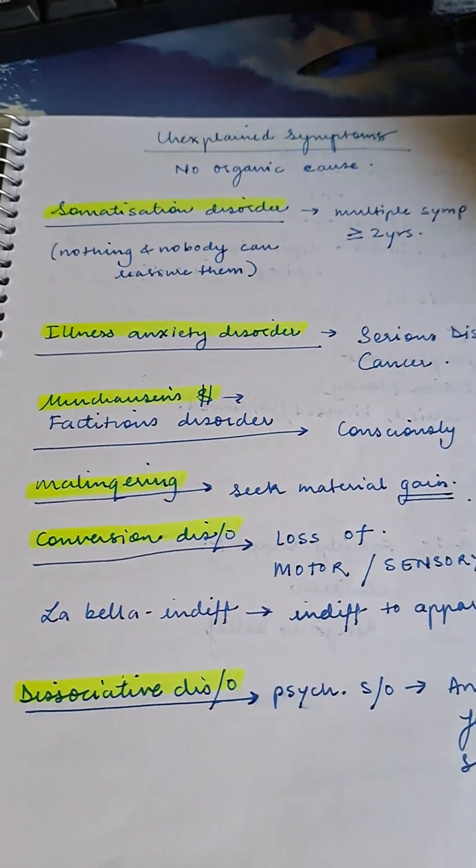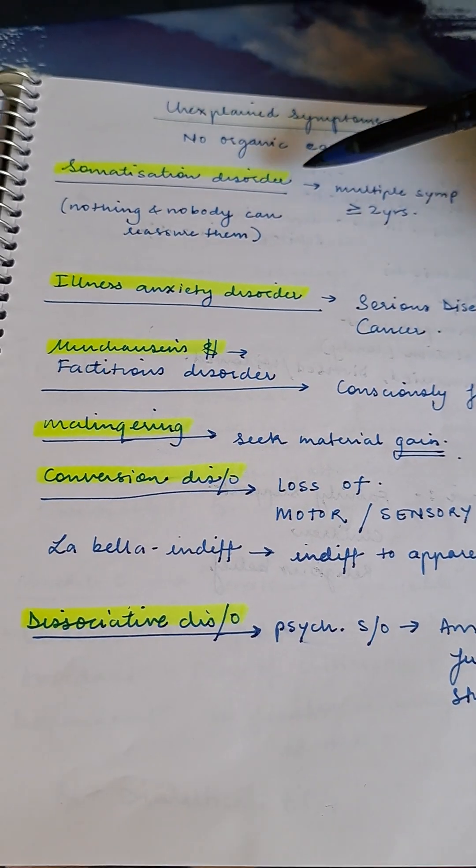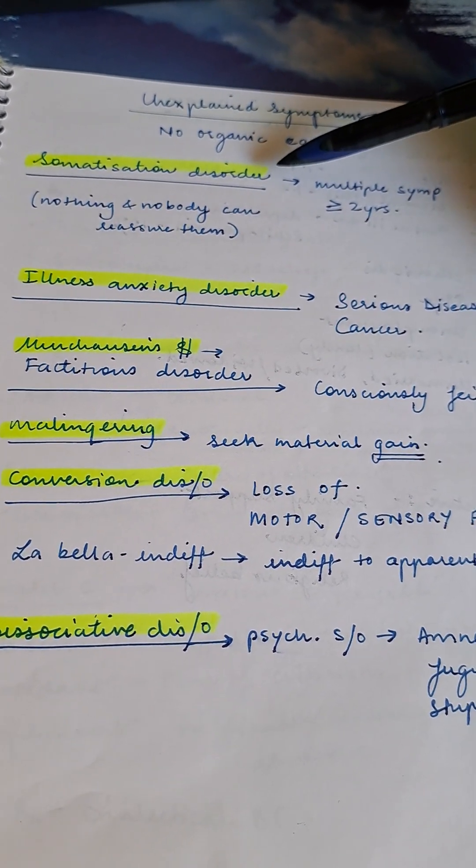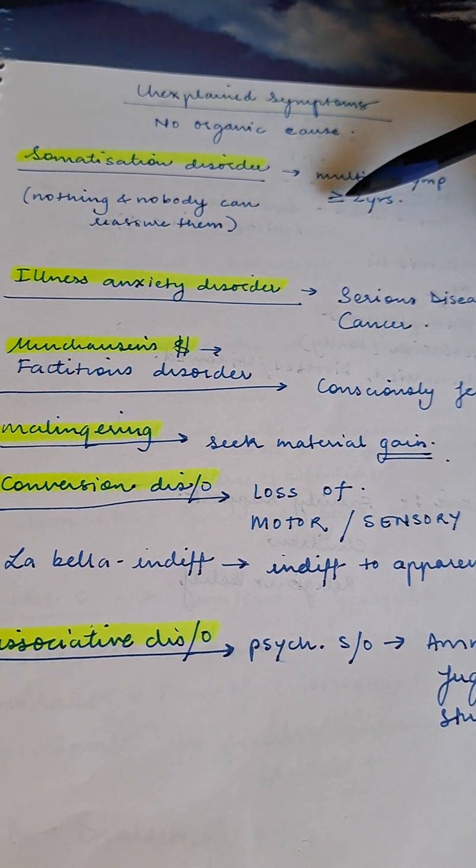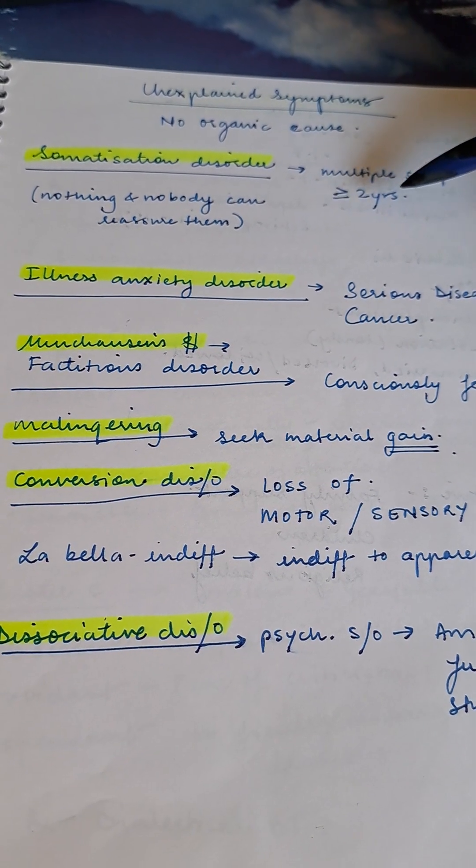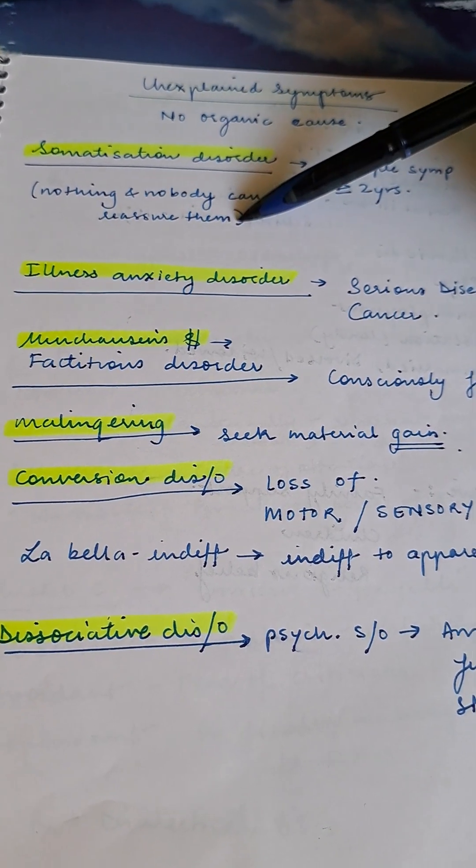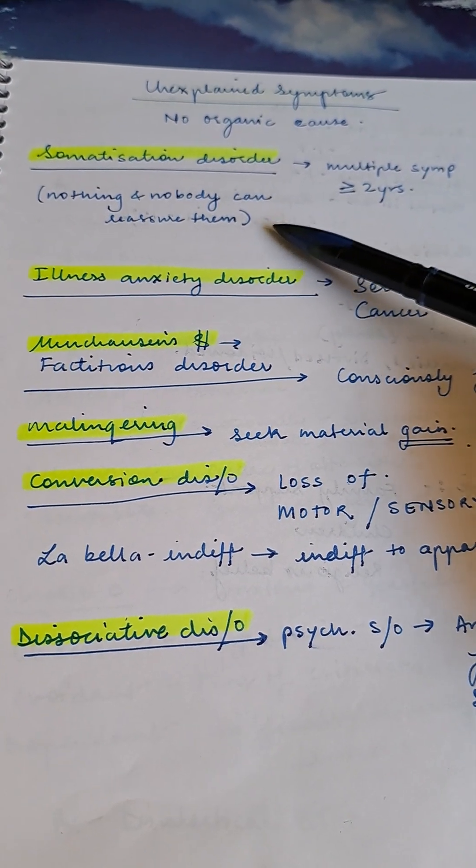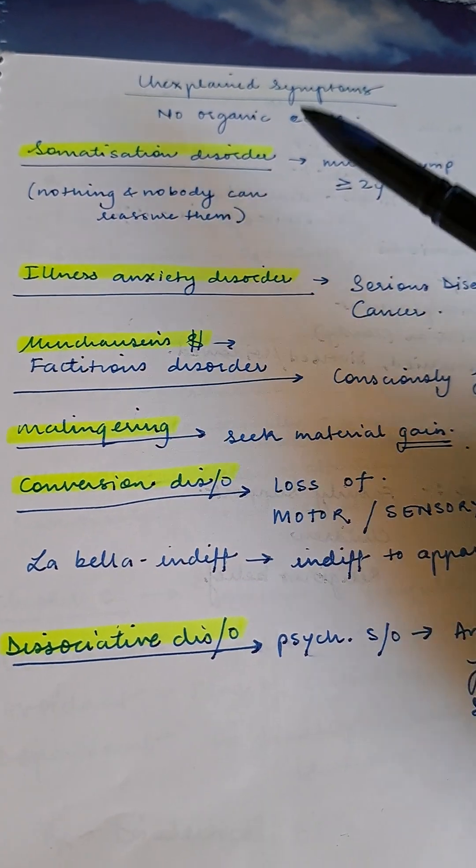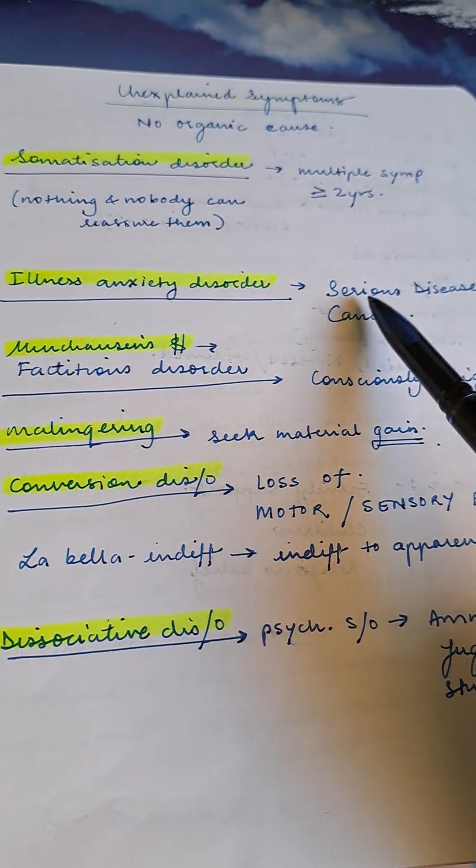Unexplained symptoms with no organic cause. Somatization disorder: patient has multiple symptoms for more than or equal to two years. Nothing and nobody can reassure them. No amount of tests or reassurance can treat these patients. Illness anxiety disorder: they believe they have serious disease or cancer.